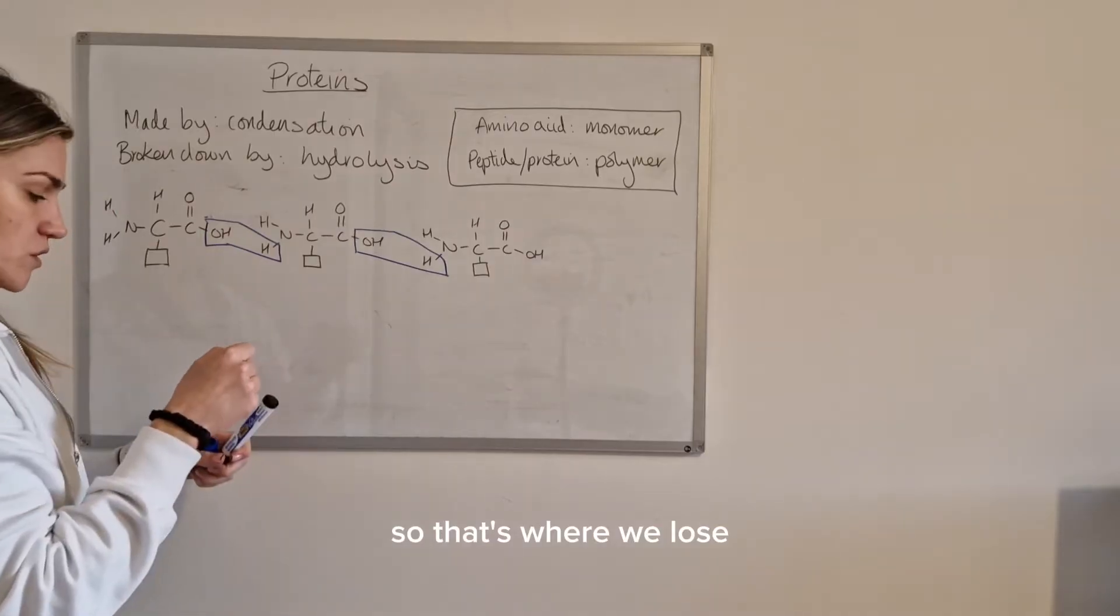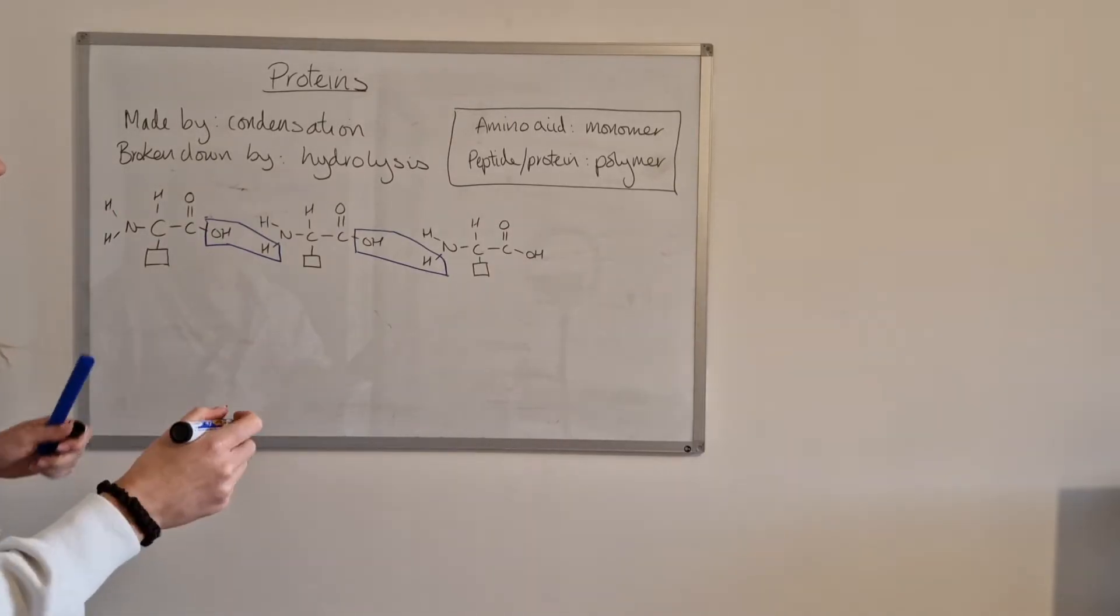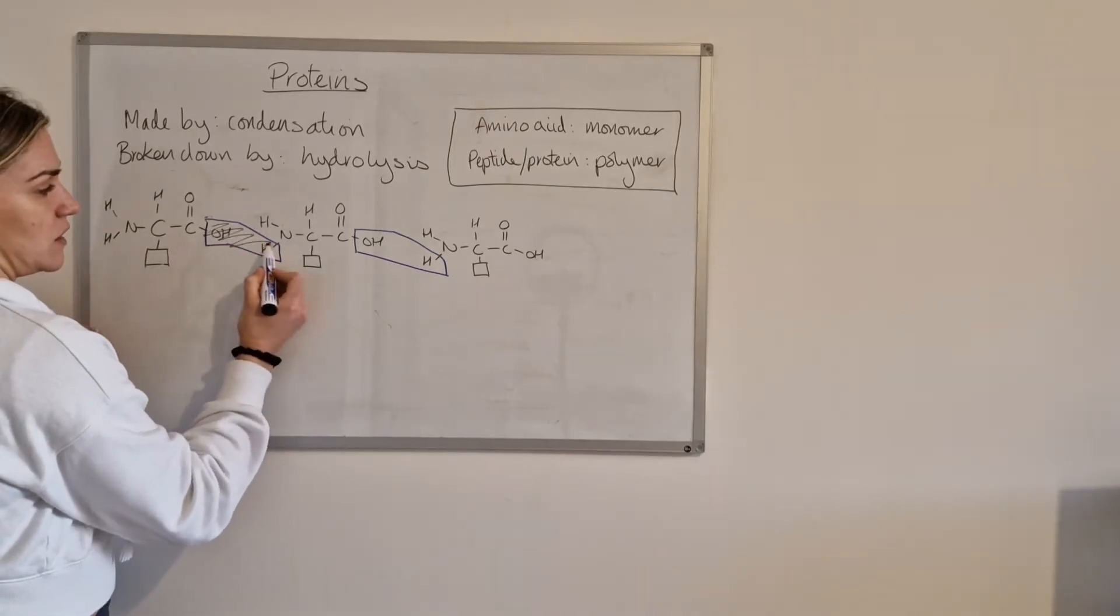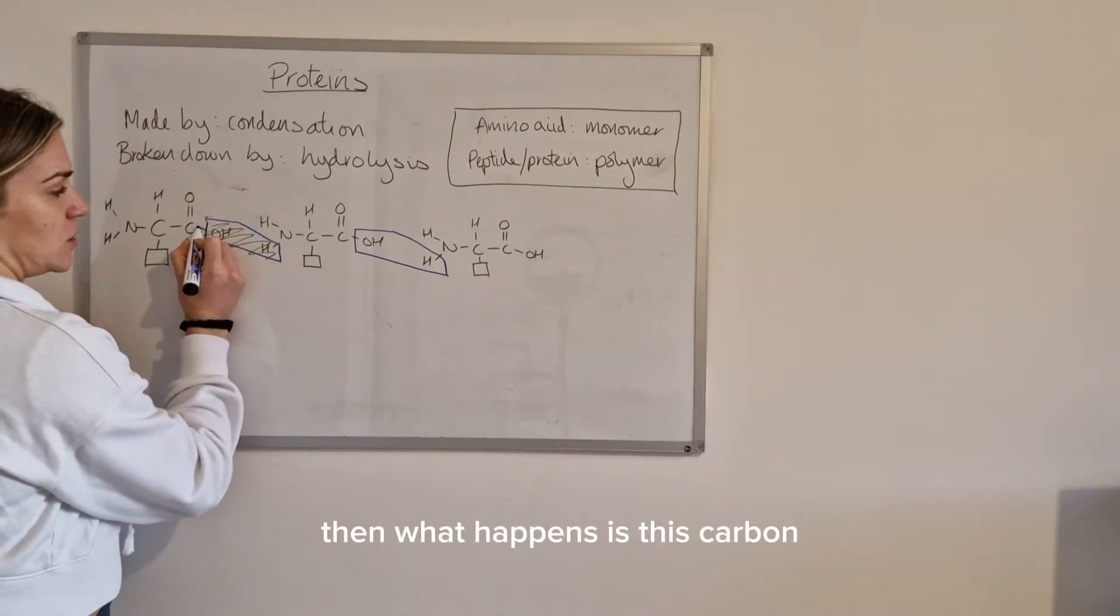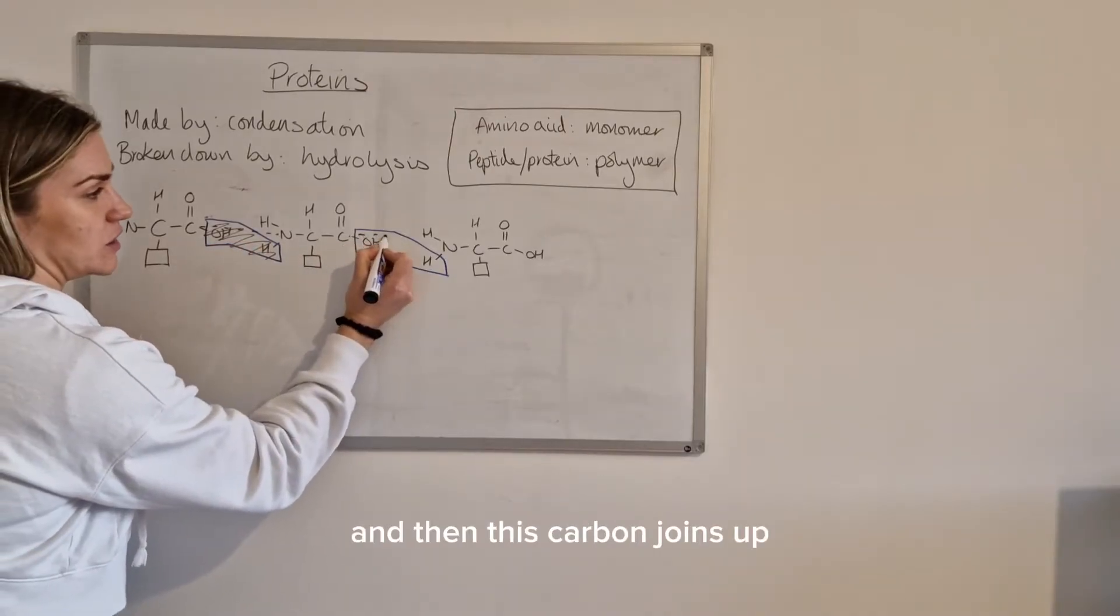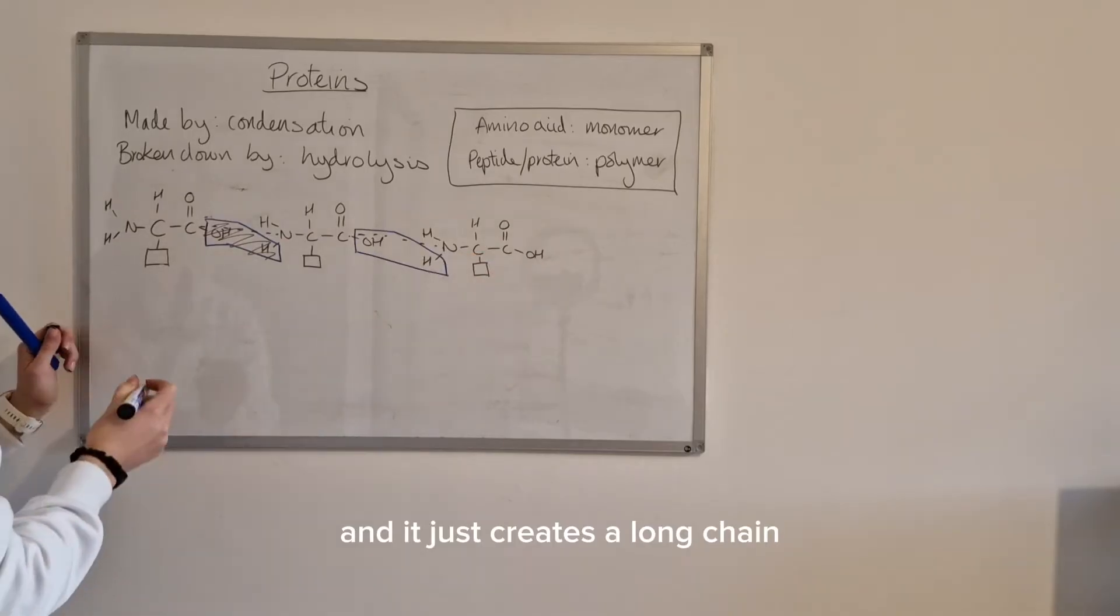Okay so that's where we lose our water molecules. So then just like with the esters, if the water is being removed then what happens is this carbon joins up with this nitrogen and then this carbon joins up with that nitrogen and it just creates a long chain.